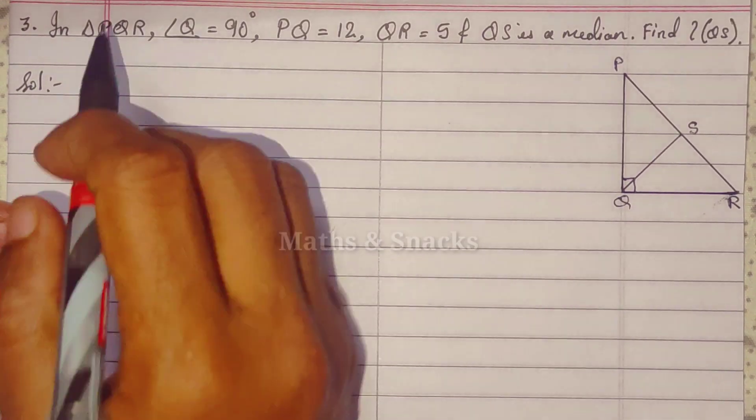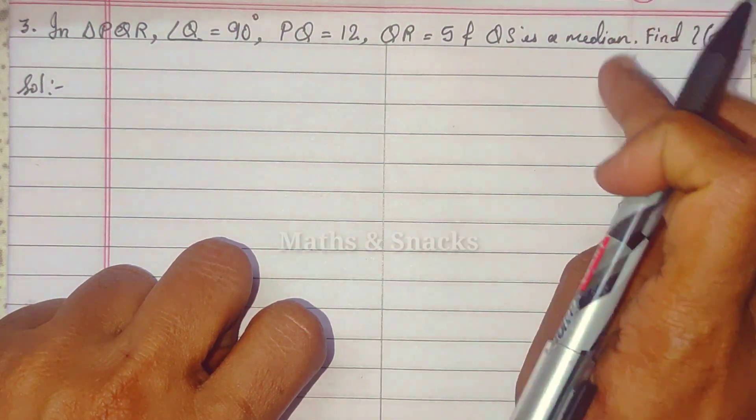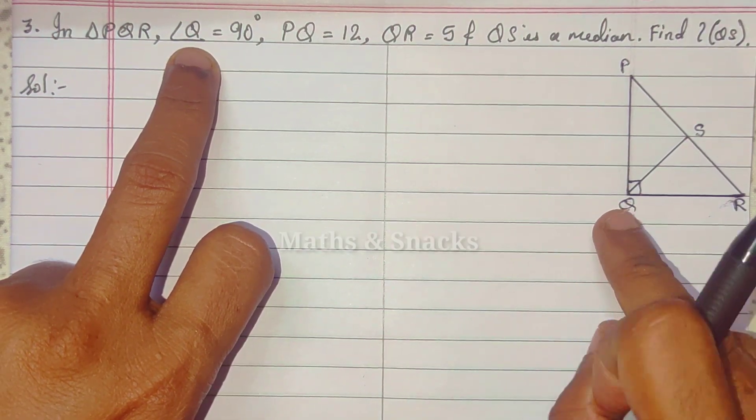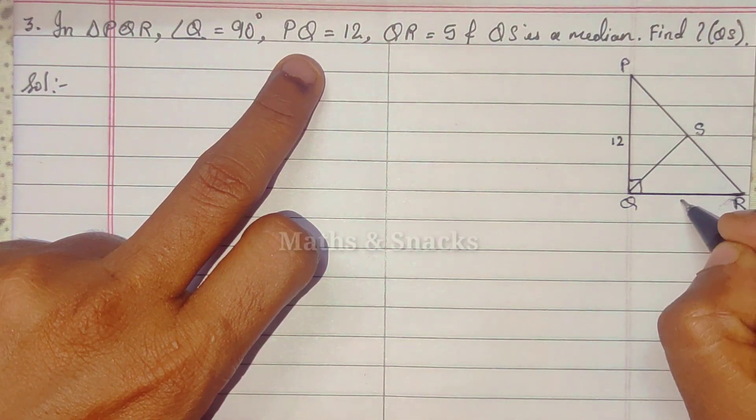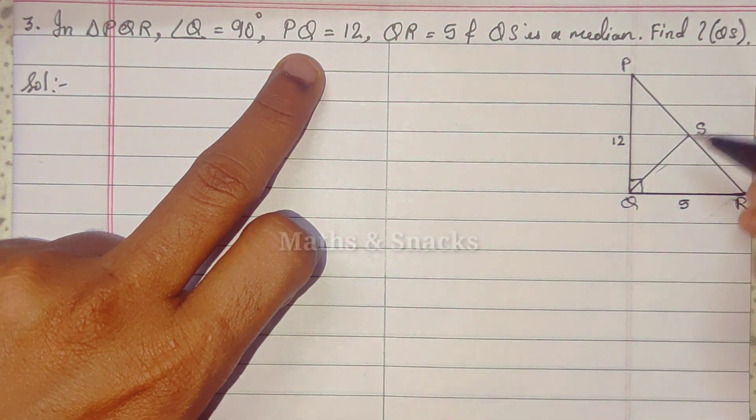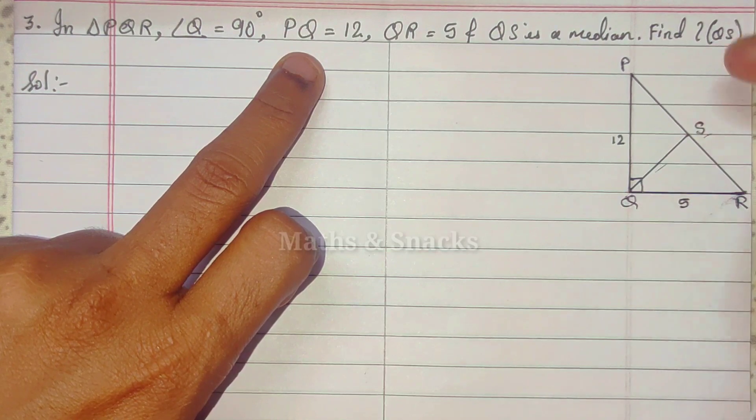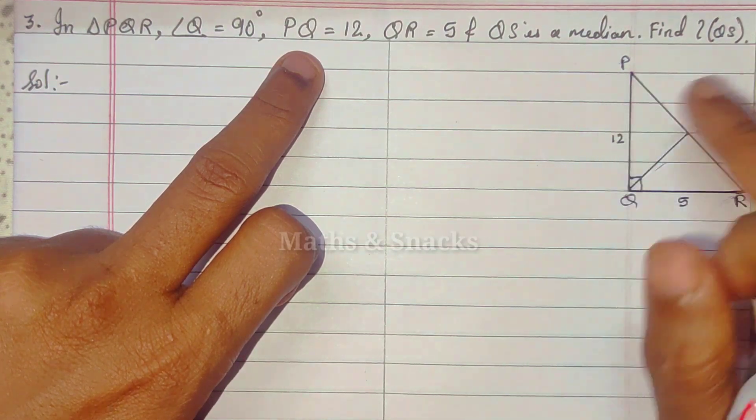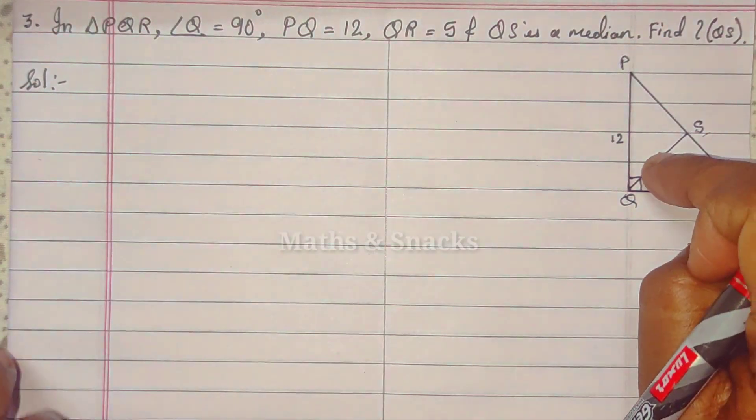Third question. In triangle PQR, Q is 90 degrees. Again, there is no figure given in the textbook, so we have to assume and draw this triangle. So PQR, Q is 90 degrees. So here is 90 degrees. Then PQ is 12. This part is 12 centimeters and QR is 5. So, and QS is a median. This is median. Find QS, this measure. Okay. So we know the median formula, we know that QS is half of PR. So this is a right-angled triangle. So by the help of Pythagoras theorem, we take hypotenuse. Once we get hypotenuse, this is half of that.